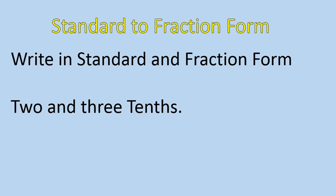If I'm asked to write 2 and 3 tenths in standard and fraction form: in standard form, I would write 2.3 — that's 2 and 3 tenths. As a fraction, I would write it as 2 and 3 tenths, where 3 tenths is 3 over 10. We're not doing a lot of complicated math — we're just writing it in two different forms. 3 tenths is 0.3, and 3 tenths is 3 over 10. They mean the same thing.